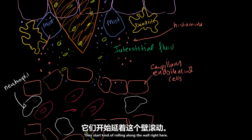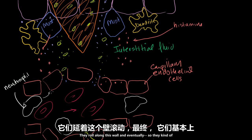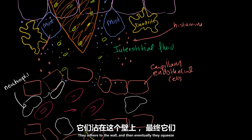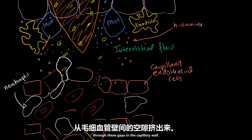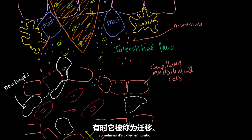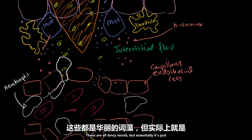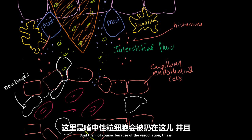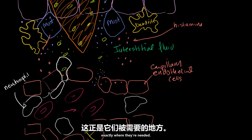What the neutrophils actually do is start rolling along the capillary wall — that's called marginalization. They roll along and stick to the wall, they adhere to it, and then eventually they squeeze through the gaps in the capillary wall. This is called diapedesis or extravasation, sometimes called emigration. Essentially it's just squeezing through the wall. And because of the vasodilation, this is exactly where the neutrophils are needed.